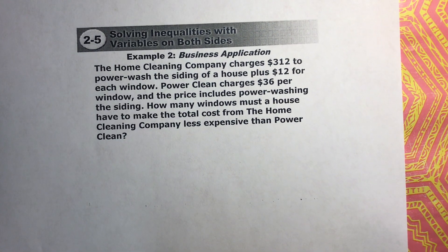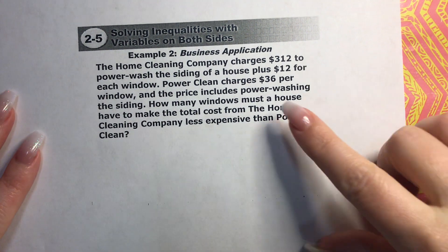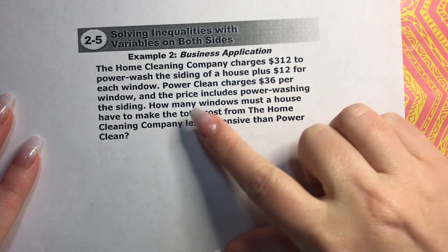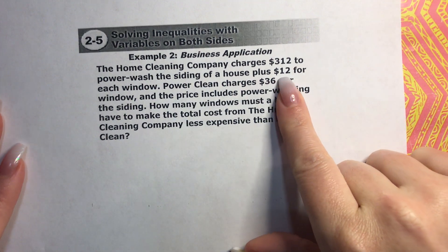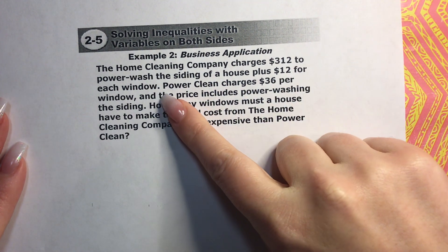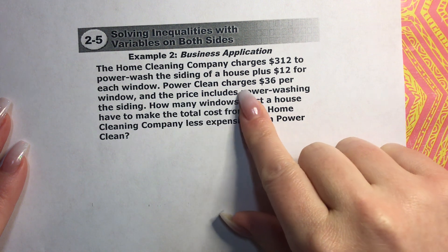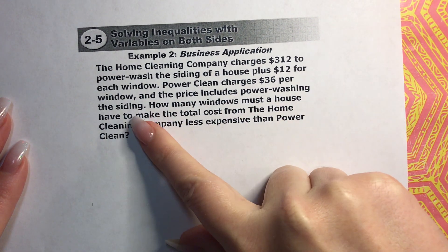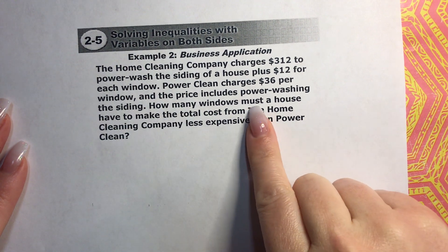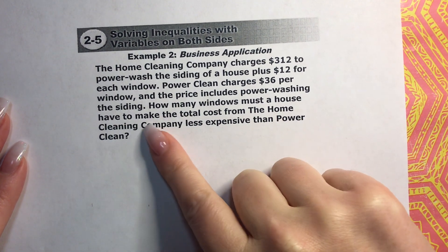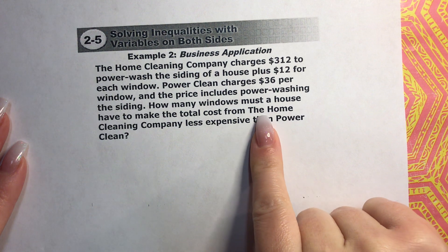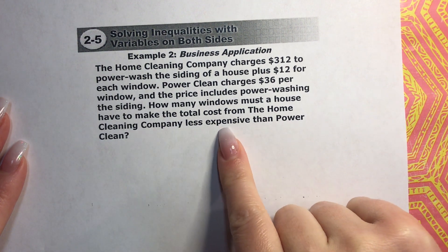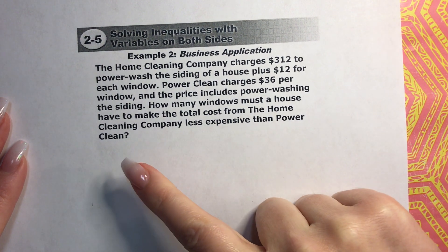Welcome back to discuss example two. This is a business application. The home cleaning company charges $312 to power wash the siding of a house plus $12 for each window. Power Clean charges $36 per window and the price includes power washing the siding. How many windows must a house have to make the total cost from the home cleaning company less expensive than Power Clean?